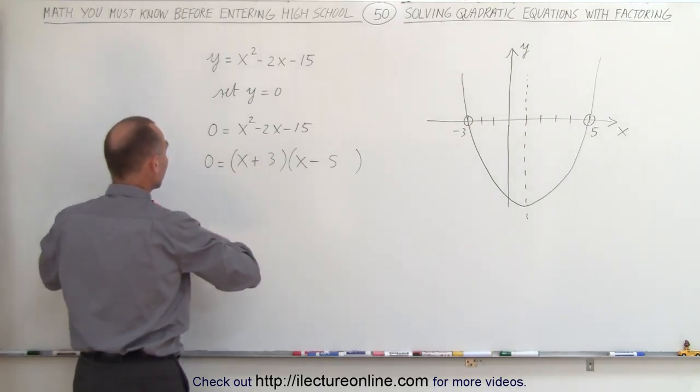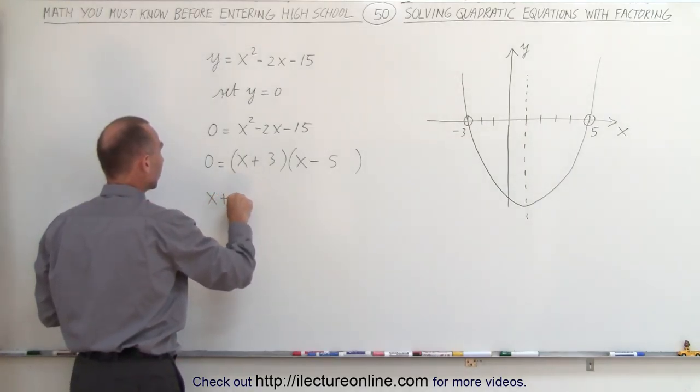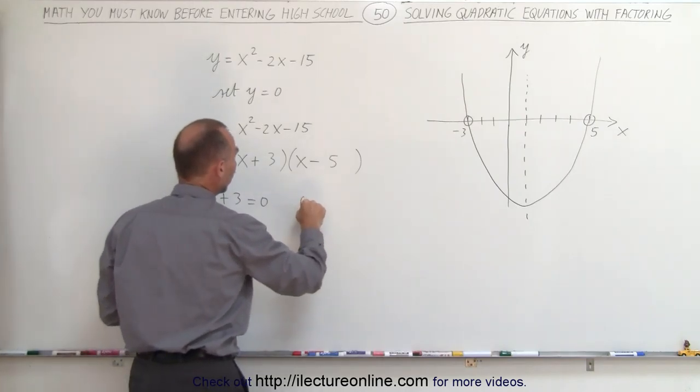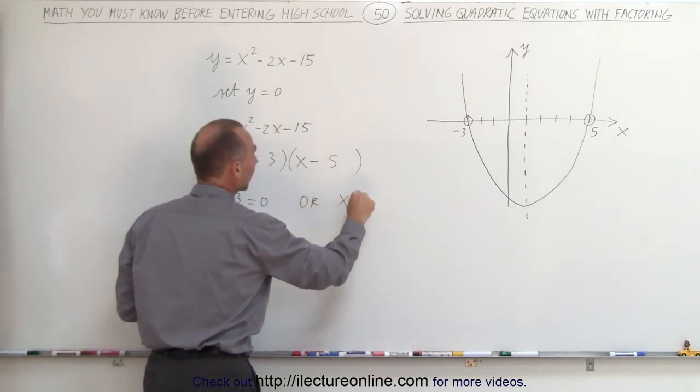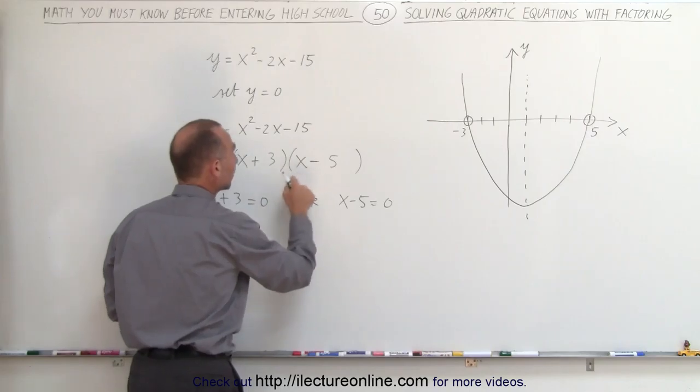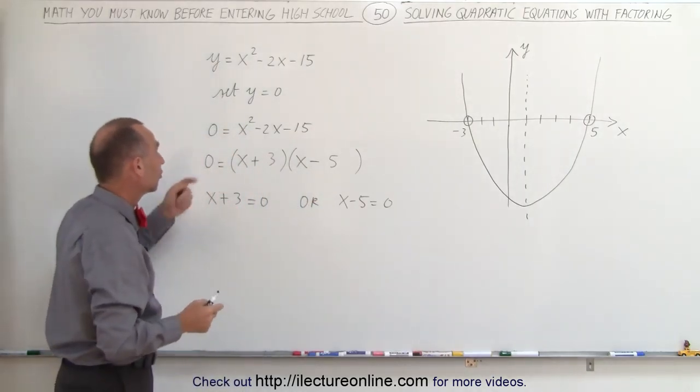So this means that either x + 3 = 0 or x - 5 = 0. Otherwise, when you multiply them together, there's no way to get 0.